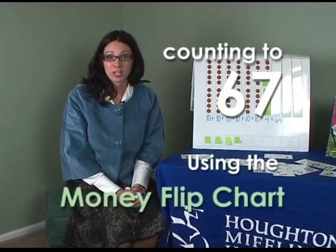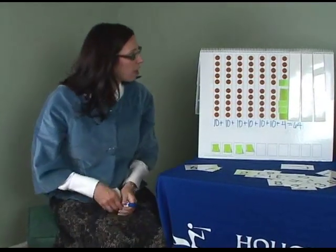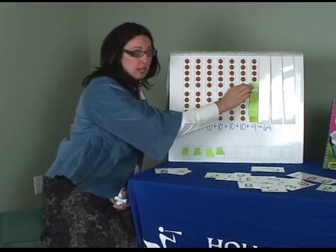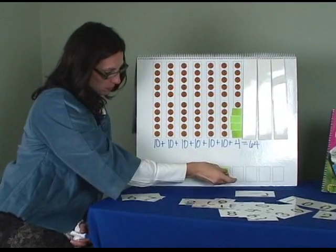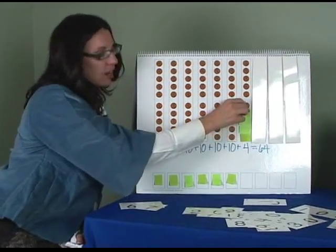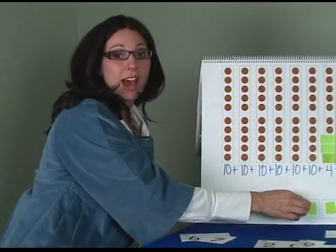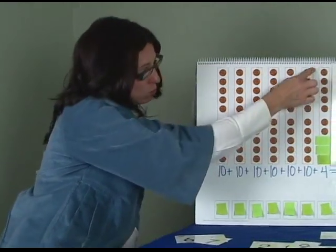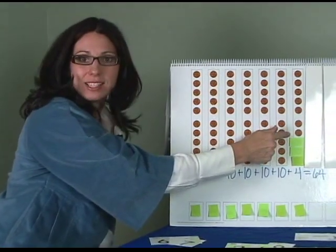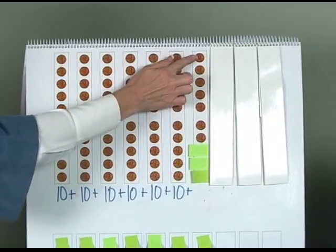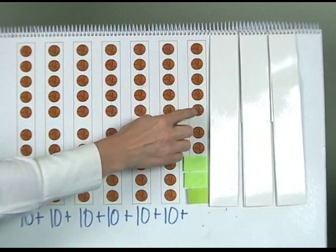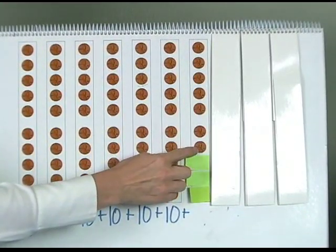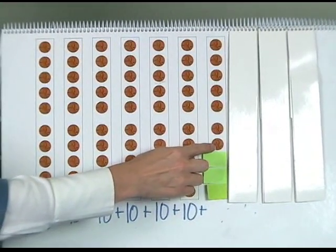Just like we added 3 to our number 64, we are going to do the same with the money flip chart. I am going to add 3 pennies: 1, 2, 3. Which now means I have a total of 7 pennies in this column: 1, 2, 3, 4, 5, 6, 7. I have 7 pennies.